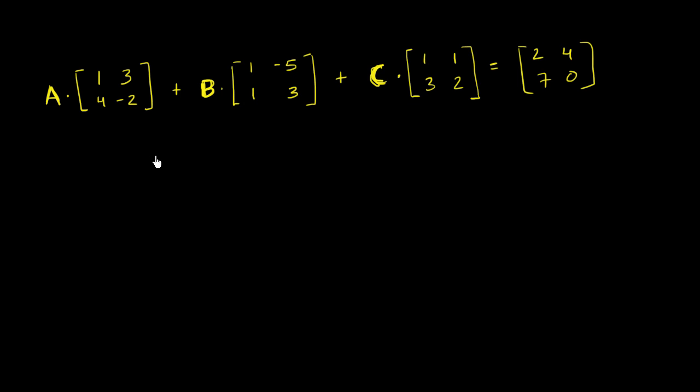They're each either going to be an identity matrix or a zero matrix. So given that clue that each of these are either an identity matrix or a zero matrix, can you pause this video and essentially solve this puzzle? Which of these are identity matrices and which of these are zero matrices?